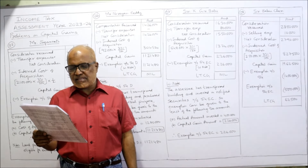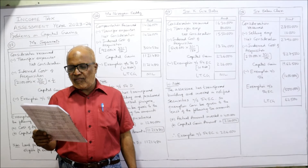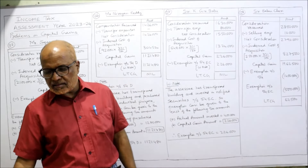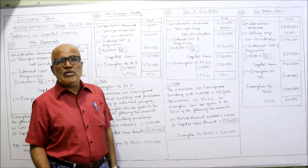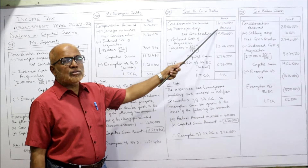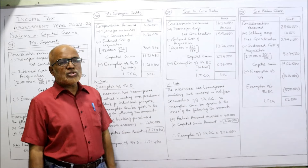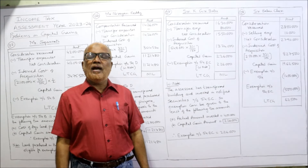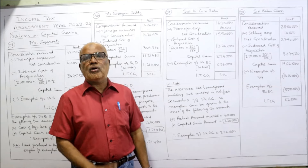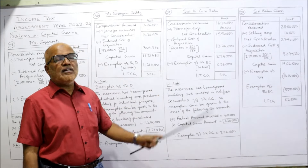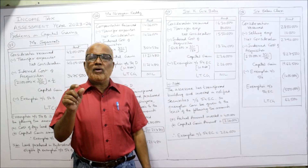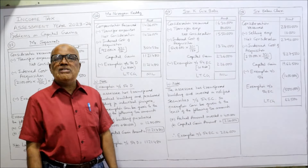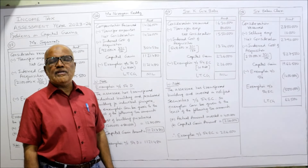Compute the income from capital gain if selling expenses are 80,000 and the cost inflation index in the year of purchase was 137. Consideration received: 16,30,000. Transfer expenses: 80,000. Net consideration: 15,50,000. Indexed cost of acquisition: 5,48,000 × 331/137 = 13,24,000, where 137 is the index number of the year of purchase as given in the problem. Capital gain: 15,50,000 − 13,24,000 = 2,26,000.